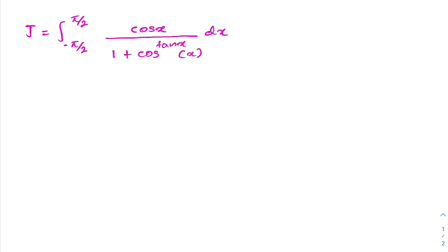Hello everyone, welcome to the mathematics channel. In this video we are going to solve this interesting integral from minus pi over 2 to pi over 2 of cosine of x over 1 plus cosine of x, raised to the tan of x. What do you think — how do we start?